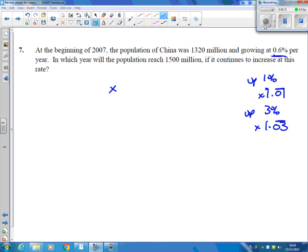We're going up at 0.6% a year, so it's actually even less than that one. So we're timesing by 1.006.